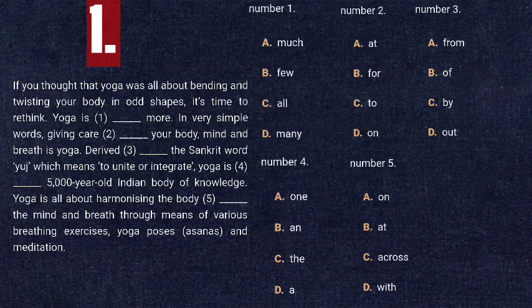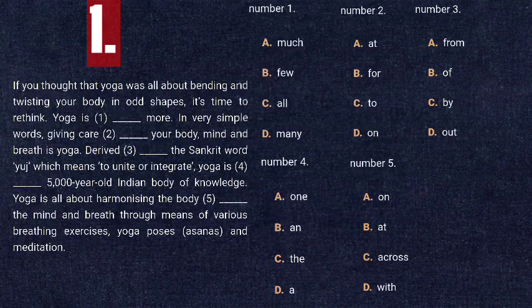Now let's check out the options. For blank number one — 'yoga is more' — the five options are: much, few, all, many. Yoga is itself an uncountable noun, so we cannot use few, all, or many, which are used with countable nouns. After eliminating them, 'much' is left. So option A is correct: 'yoga is much more,' since 'much' is used with uncountable nouns like 'much power' or 'much knowledge.'